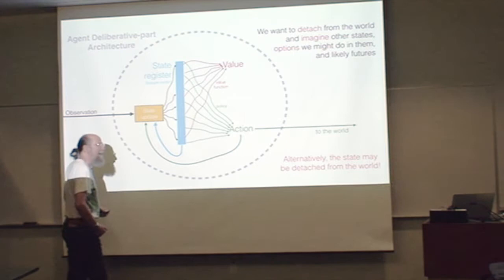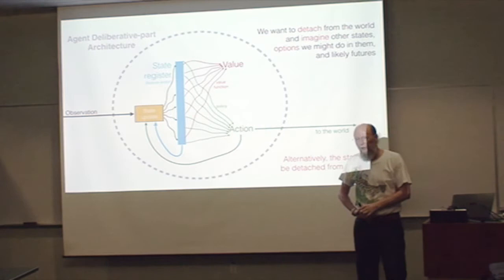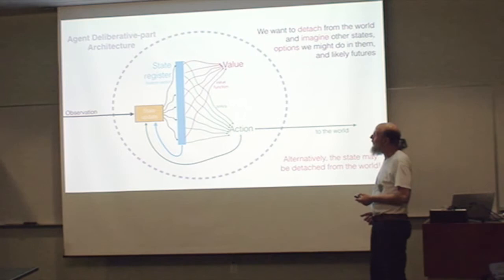Now let's go on to consider the other part, the deliberative part. This is where we don't just jump away from the tiger, but we think. We say, well, I could do this or I could do that, and maybe when I get home, I'll do so-and-so. Planning and thinking. Here we want to disconnect from the world.